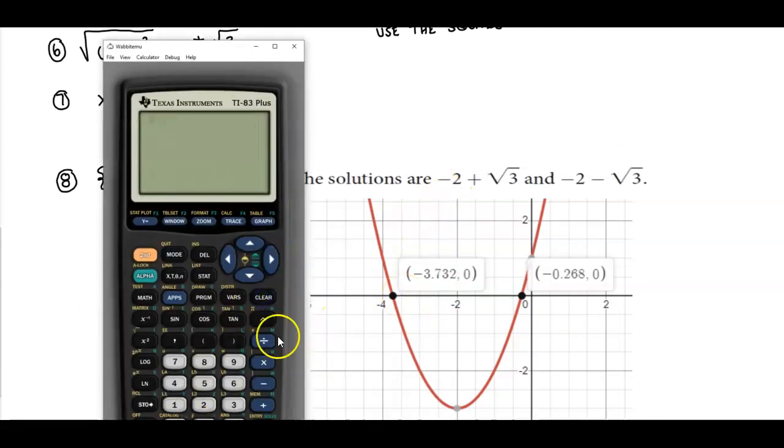So the first one is -2 + √3, and that gives us -2.68, and then we have -2 - √3, and we get -3.732. So it does verify.